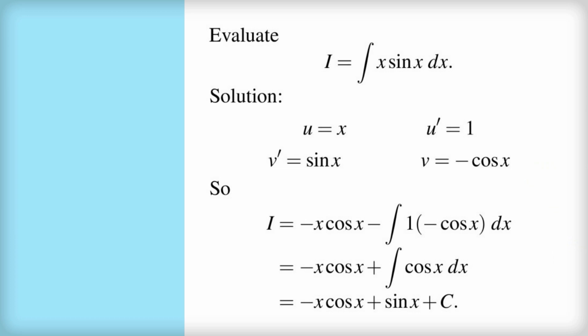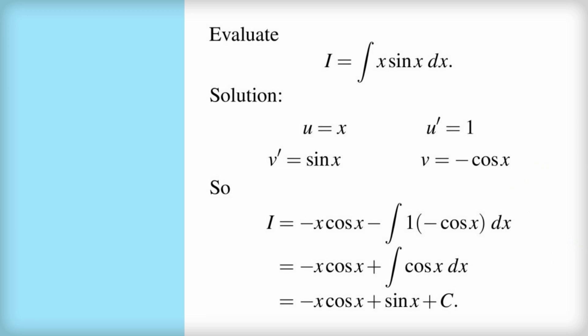And now we're ready to write down the solution. So I equals the first thing: we need to write down the product of u and v, which is negative x cos x. Then we always write a negative sign before we do the integral, and the integral is the product of the two things that we've produced here on the right-hand side of the page, the u dash and the v. So that's 1 times negative cos x dx.